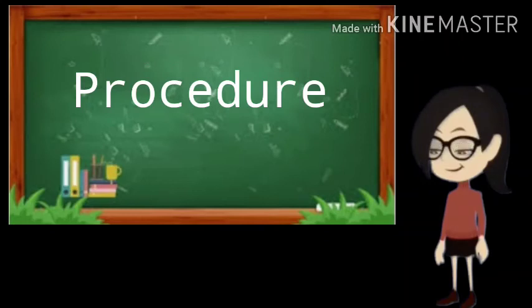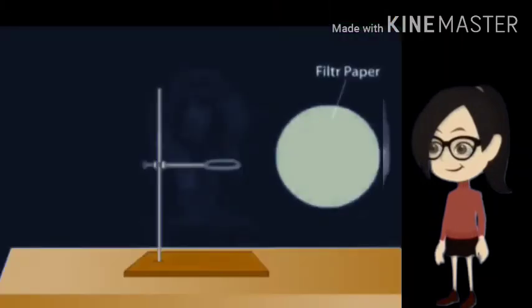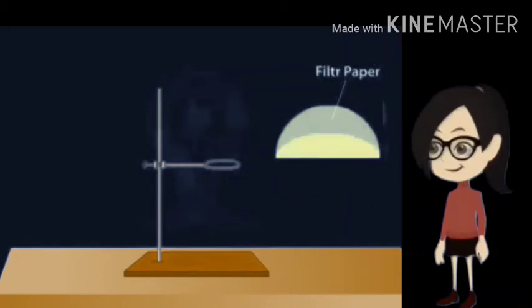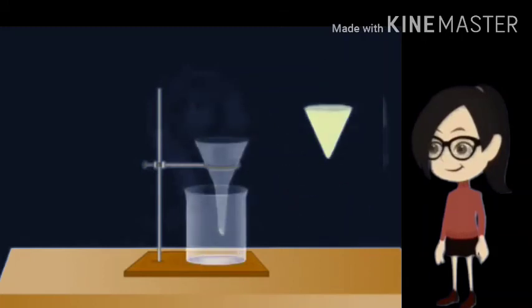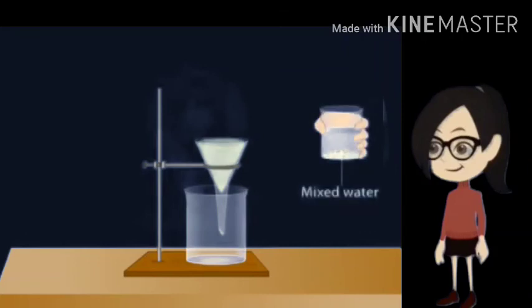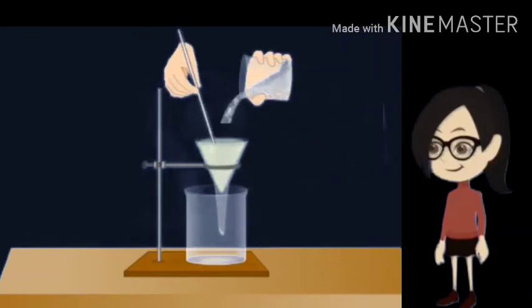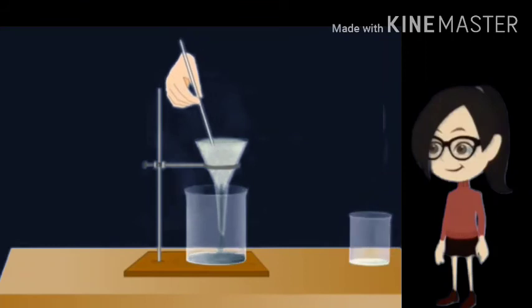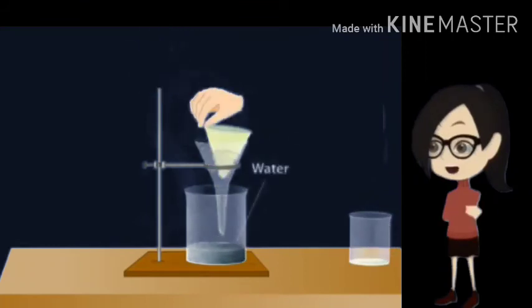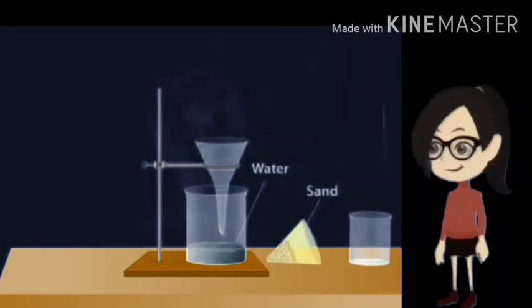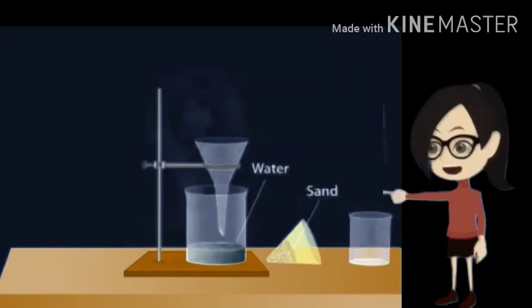Procedure. Fold the filter paper in the form of a cone. Then fix this cone onto a funnel and keep a beaker below the funnel. Take a beaker containing muddy water. Slowly pour the muddy water into the funnel. The clear liquid passes through the funnel and is collected in the beaker below.